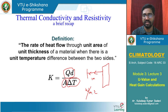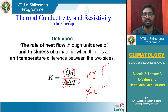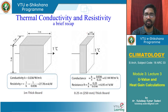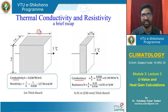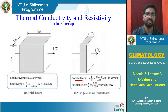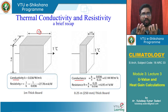Conductivity is the ability of a material to allow heat flow. The difference between conductivity and conductance is that conductivity is measured for 1 meter of material — whatever heat flows through that section — and it represents the intrinsic property of the material. So when we compare conductivity of two materials, we are comparing the property of the two materials themselves.